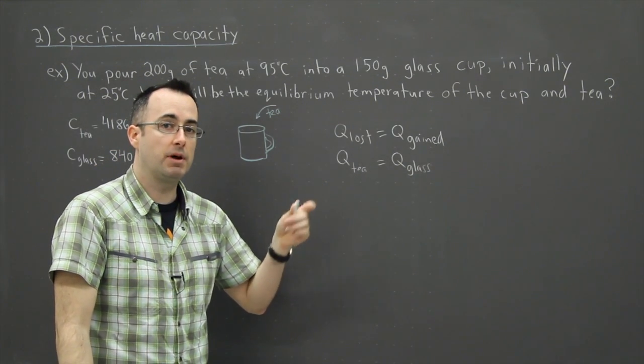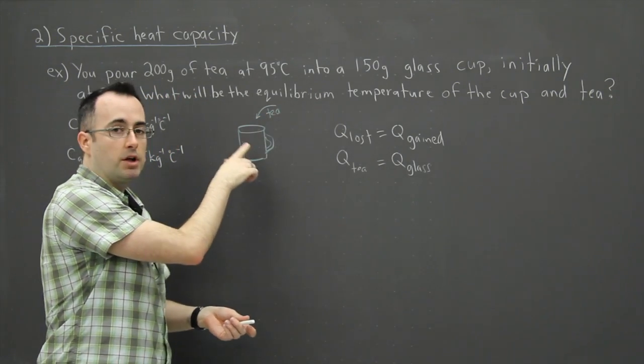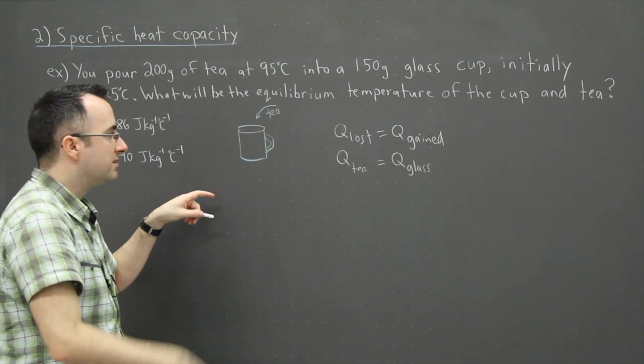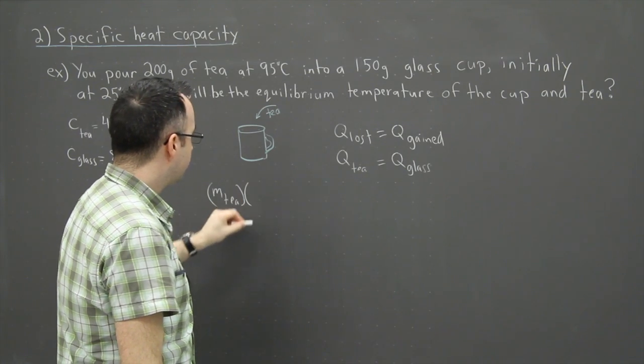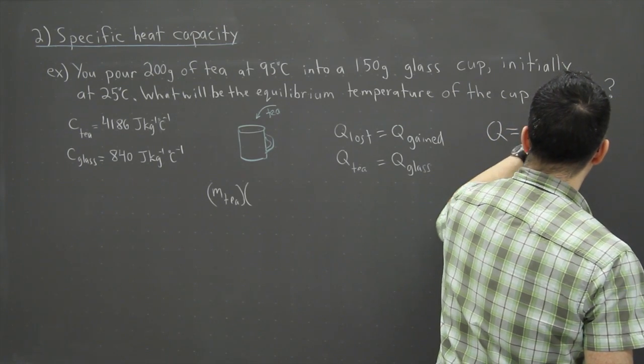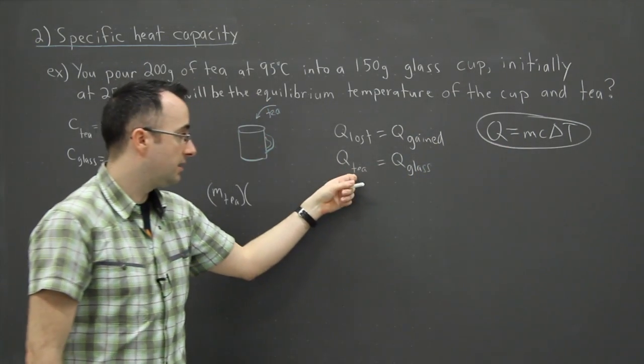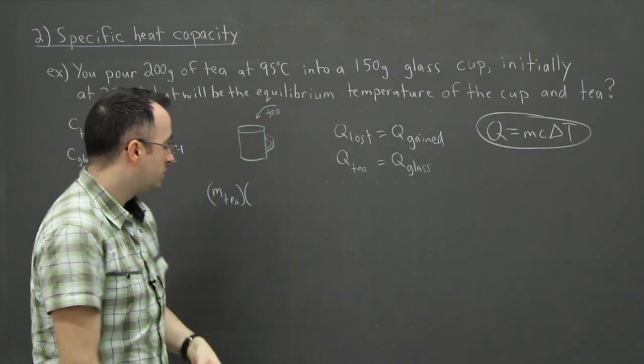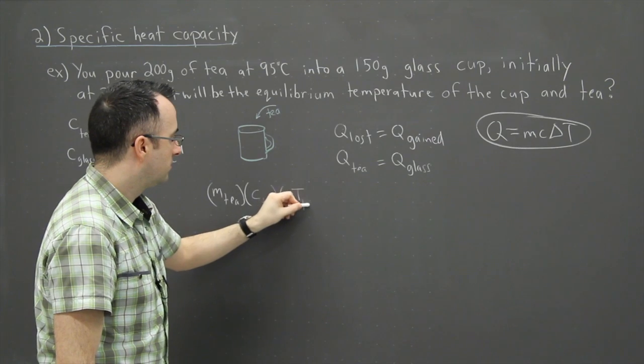For right now we're just having T cool down and the cup heat up. So we can write down an equation for these. The equation that governs all this is Q equals mcΔT. For each of these there's a Q equals mcΔT for the T and there's mcΔT for the glass. So I have m_T × C_T × ΔT_T.